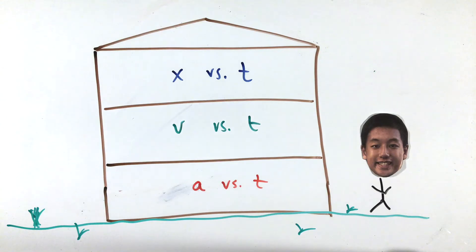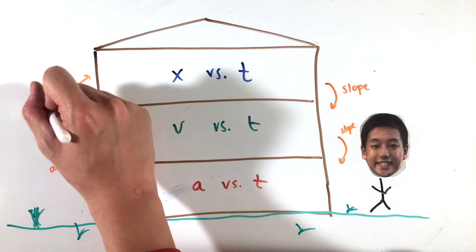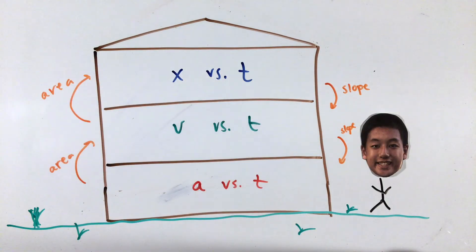with position on the top floor, acceleration on the bottom floor, and velocity in the middle. To convert any graph to the floor underneath it, we simply graph the slope of the original given graph at any given time. To convert a graph up a floor or up a level, simply graph the area enclosed by the original graph at any given time.